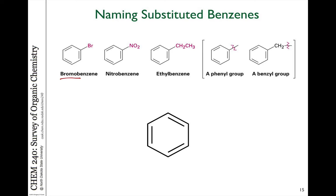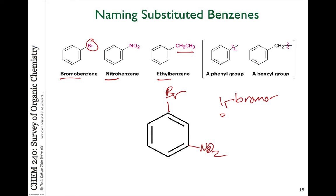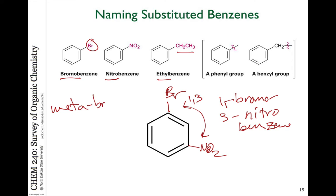When we name benzene rings, we usually name them according to the substituent attached, with benzene as the parent. For example, bromobenzene is a bromine attached to a benzene ring, nitrobenzene is a nitro group attached to a benzene ring, and ethylbenzene is an ethyl group attached to a benzene ring. If we have more than one substituent, we give them a number indicating where they are located around the benzene ring. So if we have a bromine and a nitro group, it would be 1-bromo-3-nitrobenzene.